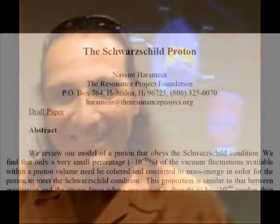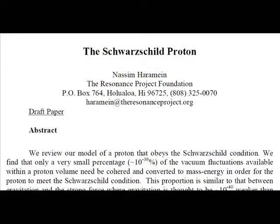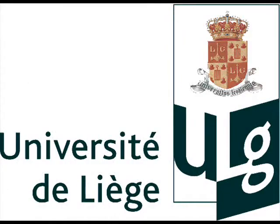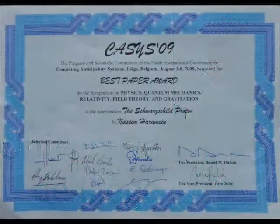I want to talk about Nassim Haramein's recent paper on the Schwarzschild proton, which was not only accepted but chosen by a panel of 11 peer reviewers at the University of Liege in Belgium to win the prestigious best paper award in the field of physics.